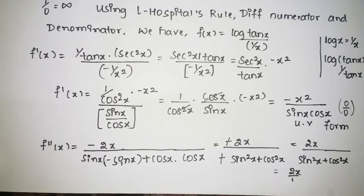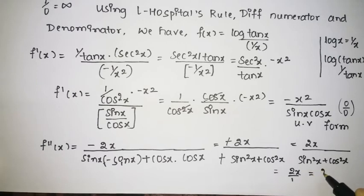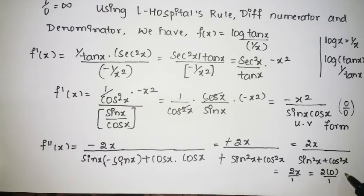Now applying the limit as x tends to 0, we get 2 into 0 divided by 1, which is 0 by 1, which equals 0. Therefore, 0 is the required result for the given equation.